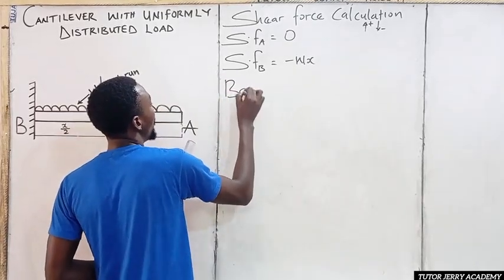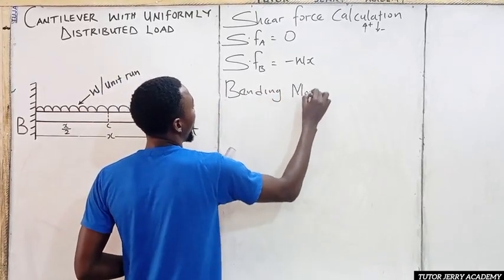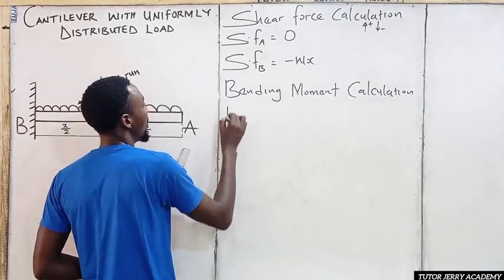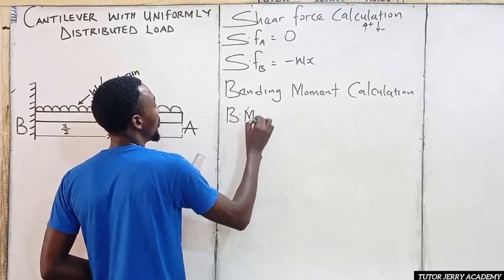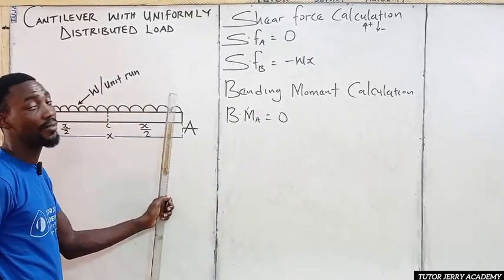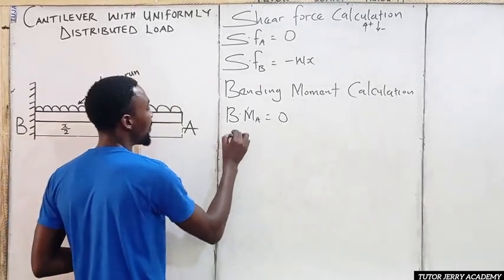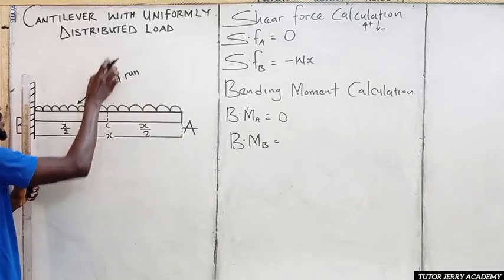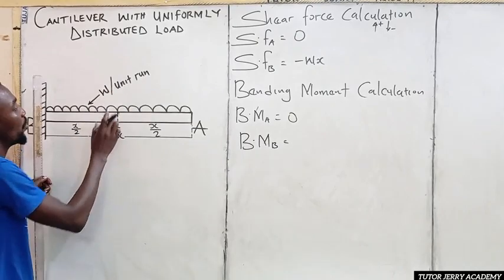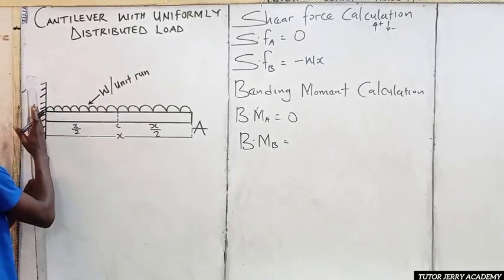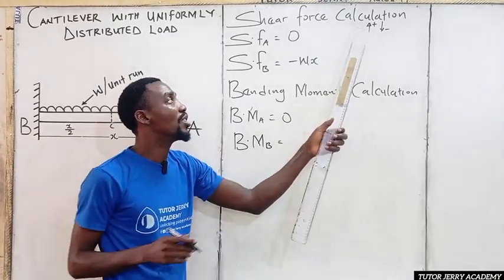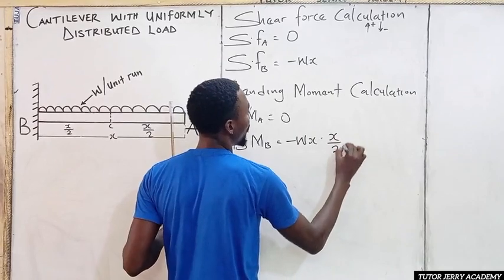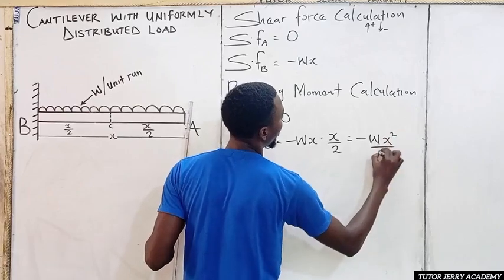Now let's look at the bending moment calculation. The bending moment at point A is zero, because we don't have any force there. For the bending moment at point B, we have a downward point load WX multiplied by the distance X over 2, which gives us minus WX squared all over two.